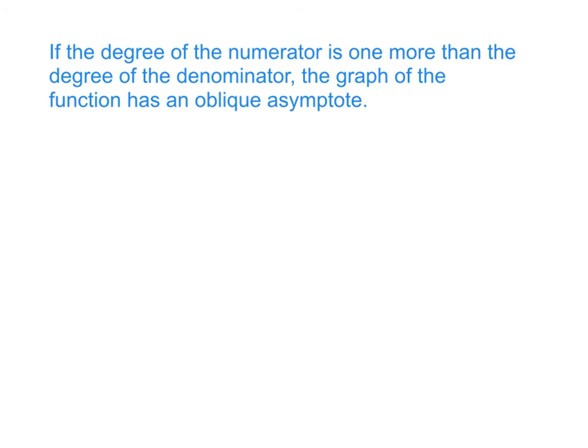Today we're going to learn about oblique asymptotes. An oblique asymptote occurs when the degree of the numerator is one more than the degree of the denominator.